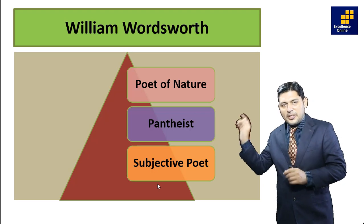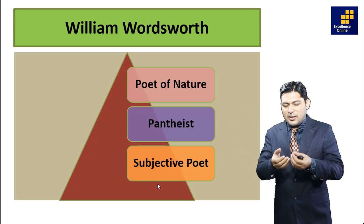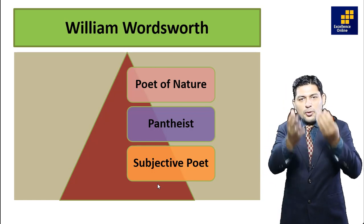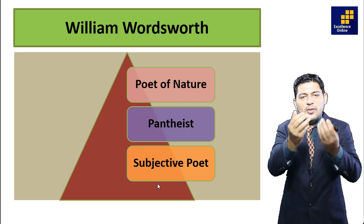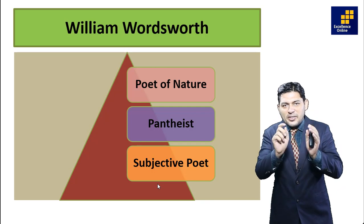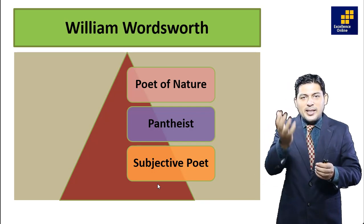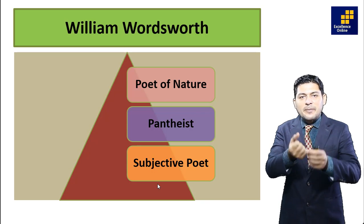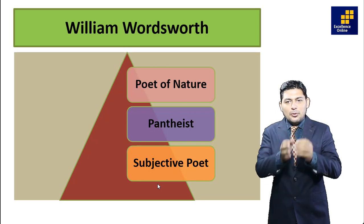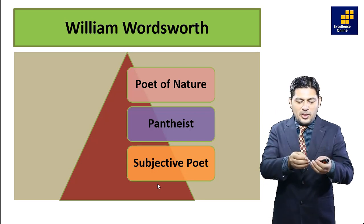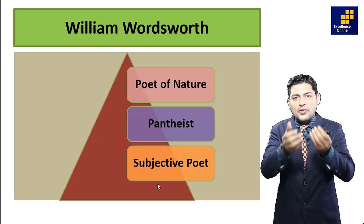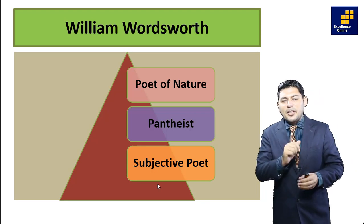William Wordsworth is a subjective poet because in his poems he discusses his own emotions, sentiments, and philosophies. He is not an objective poet. In all his poems he does not give you a lesson or morality. For example, in 'Lucy Gray,' 'Tintern Abbey,' and 'Daffodils,' at the end of the poem we do not get any kind of message — only emotions, sentiments, and his feelings.